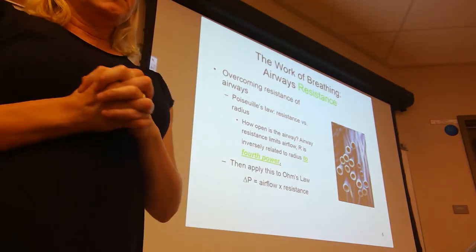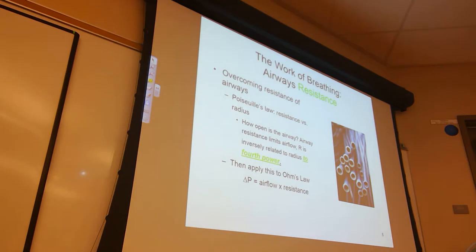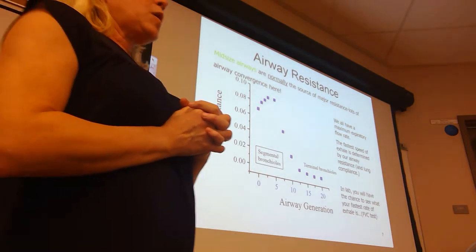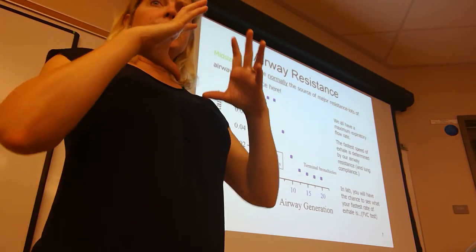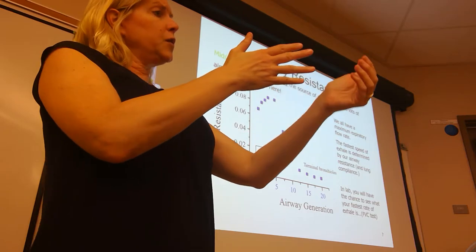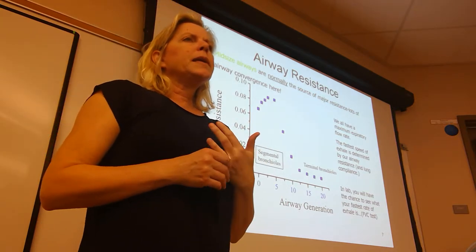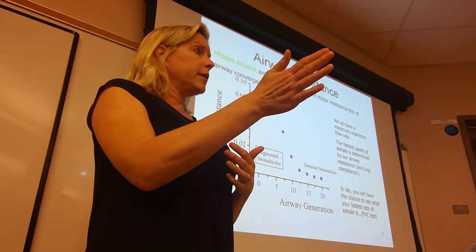Which air passageways have the greatest tendency for resistance? Not only do some have a tendency to collapse or constrict, but we also have too many air passageways converging onto fewer, bigger ones. Have you ever been on a two-lane highway where traffic builds up behind a semi-trailer truck? One narrow lane means a lot of resistance and traffic building up.